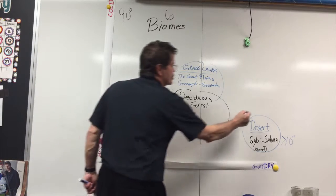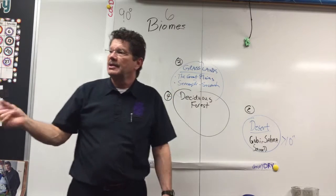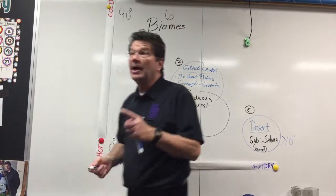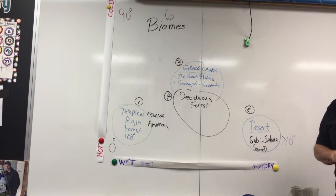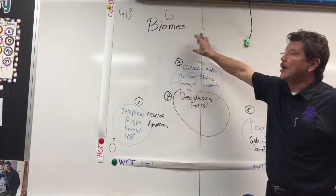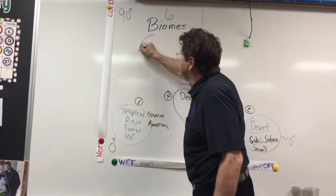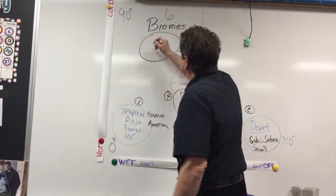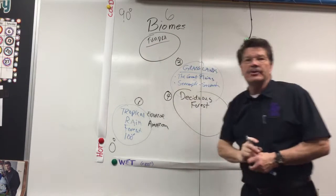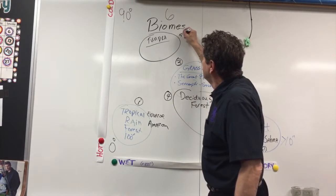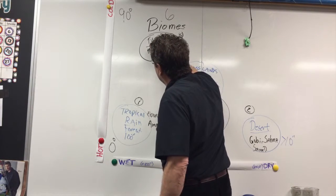So we have one, two, three, four biomes so far. What else? The tundra. Where should the tundra go on our chart? Is it hot or cold? Cold — so it's up north. And is it wet or dry? Dry. So we'll put it right about there. T-U-N-D-R-A. We have tundras in different places in the world. Can you name a tundra somewhere? The Arctic — Arctic tundra. And an alpine tundra.